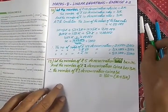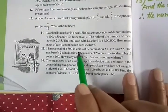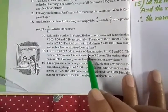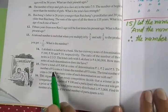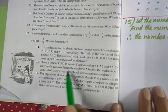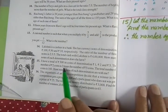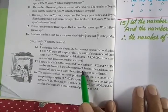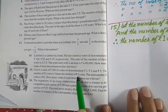Let's take up sum number 15. Let's read out the sum. I have a total of ₹300 in coins of denomination. Mind you, in the earlier sum they were in notes and now we have them in coins. The number of ₹2 coins is 3 times the number of ₹5 coins. That means we shall assume the number of ₹5 coins first.